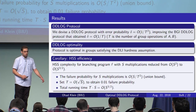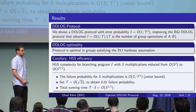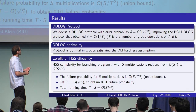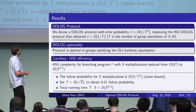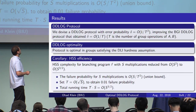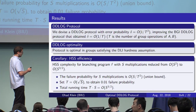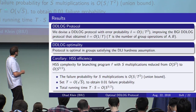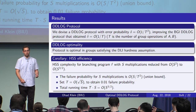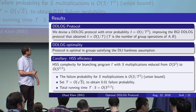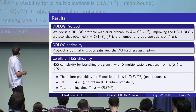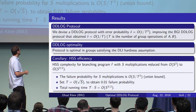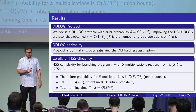We can apply the DD log protocol to improve the efficiency of the HSS protocol. Basically, we improve the running time of the evaluation functions of the servers from S squared to S to the three-halves, where S is the number of multiplications in the program F we want to compute. How does the DD log protocol imply this HSS improvement? HSS needs to solve a DD log problem for each multiplication. If we look at all the DD log problems needed in a single program and use our DD log protocol, the total error probability is S over T squared. By taking the running time of the DD log protocol to be square root of S, the overall error probability is a constant, giving evaluation time of S times T, which is S to the three-halves.